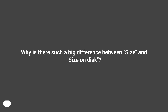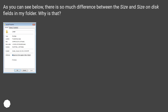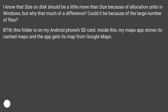Why is there such a big difference between size and size on disk? As you can see below, there is so much difference between the size and size on disk fields in my folder. Why is that? This folder is on my Android phone's SD card. Inside this, my Maps app stores its cached maps and the app gets its map from Google Maps.